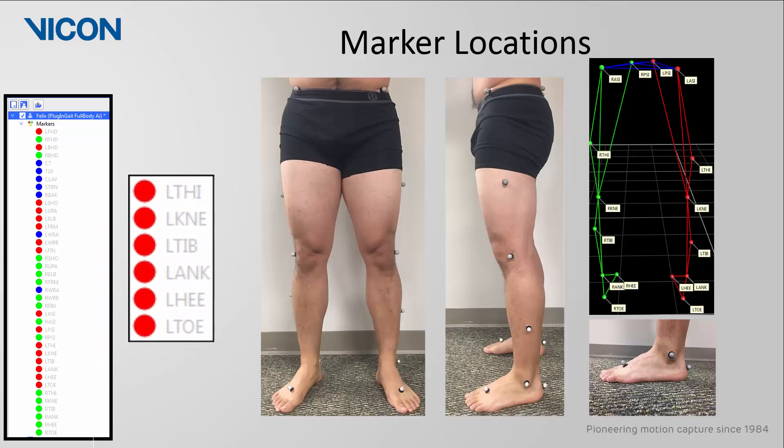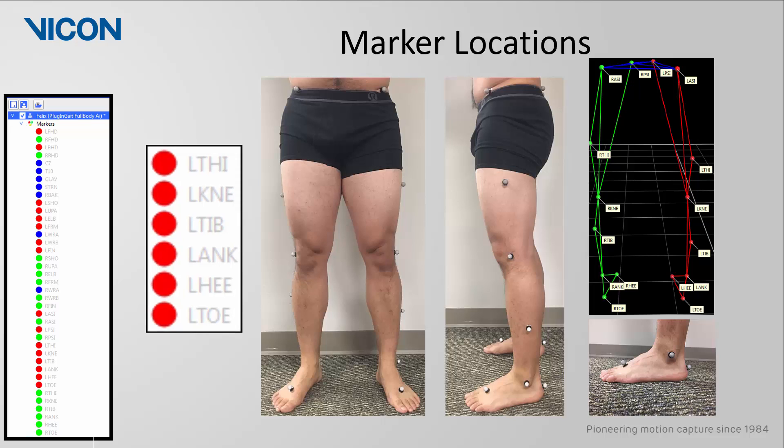Next, we have the left leg markers. Begin first by placing the left knee marker on the lateral side of the knee in the axis of flexion extension. Have the subject passively flex and extend the knee to better determine this location. Now imagine a line between the hip joint center to this knee marker. Locate the midpoint of this line and place the left thigh marker just distal to this point.